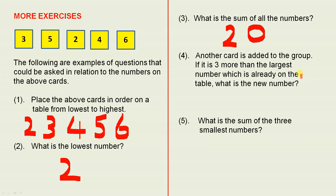Now this is an interesting question so you have to think about it carefully. Another card is added to the group. So this is the original group here, and we add one more card to the group. Now we don't know what it's going to be so let's have a look what the question asks. If it is 3 more than the largest number which is already on the table, what is the new number? It says it is 3 more than the largest. The largest is 6.